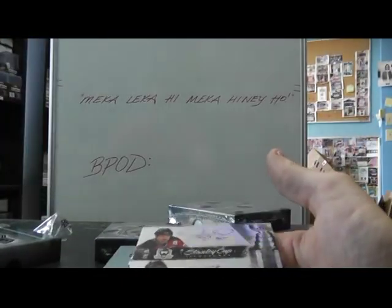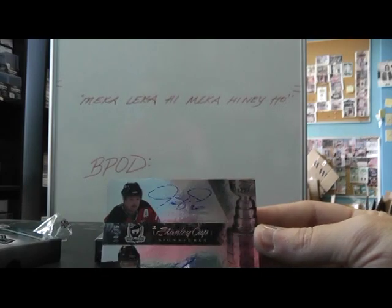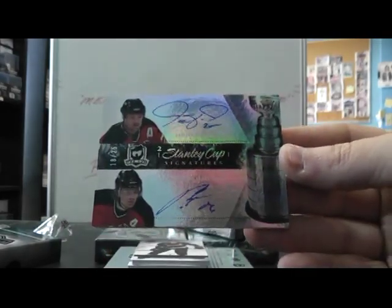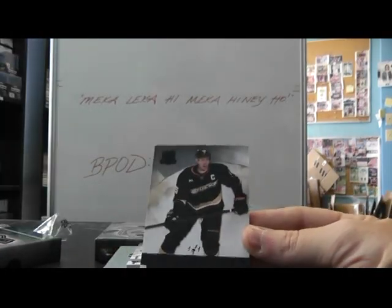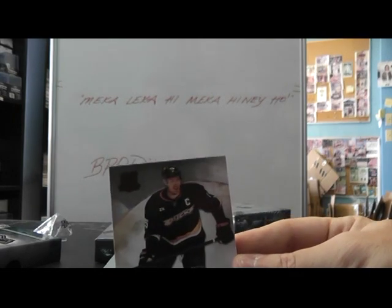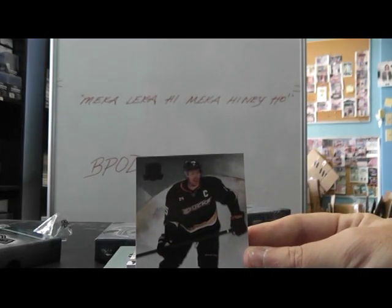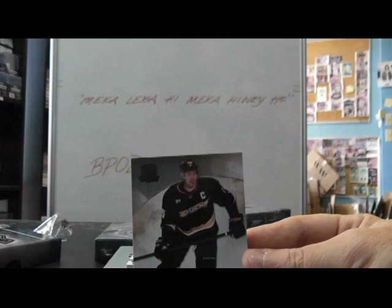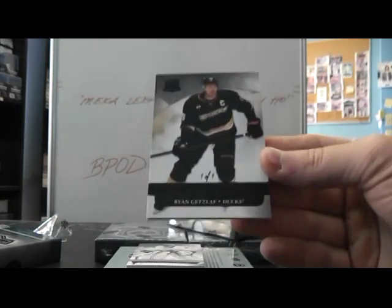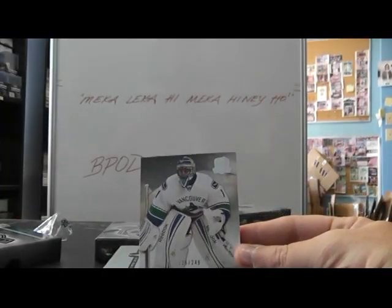Then we have a dual autograph — Jordan Arnott and Patrick Eliash, numbered to 25, for New Jersey. Then we got our first one-of-one — for the Ducks — Ryan Getzlaff, one of one, base. It's trying to focus — there it goes. One of one. Roberto Luongo, 249, base card for the Vancouver Canucks. That's the halfway point.